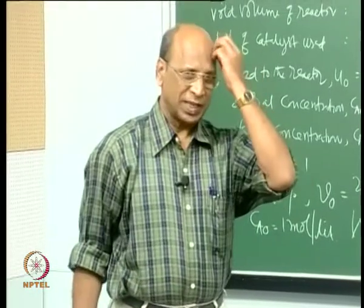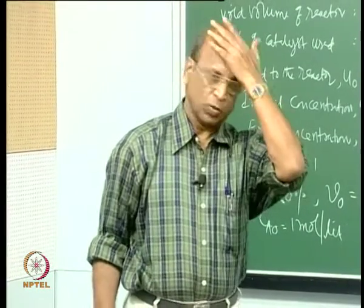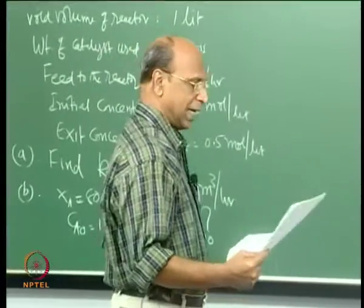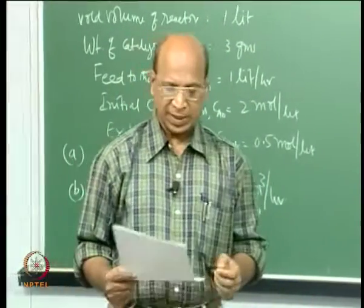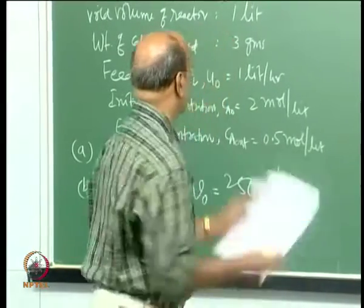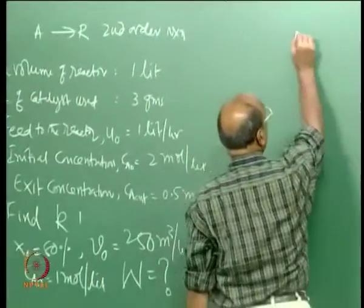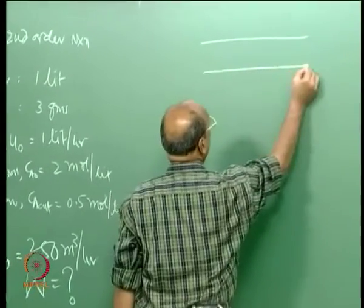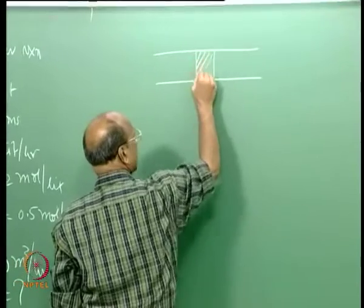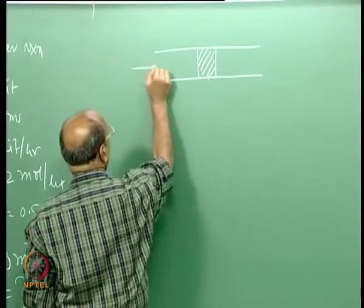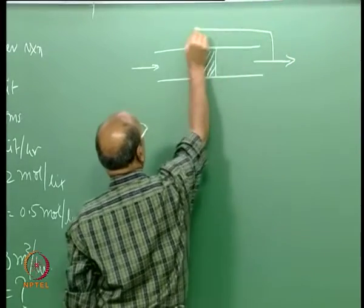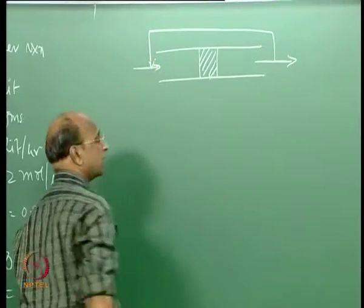Now you have the calculators. This is a second order reaction - recycle reactor with large recycle ratio. The setup is: catalyst W = 3 grams, volumetric flow rate V₀ = 1 liter per hour, C_A0 = 2 moles per liter, exit concentration 0.5 moles per liter.